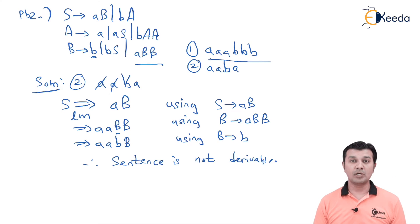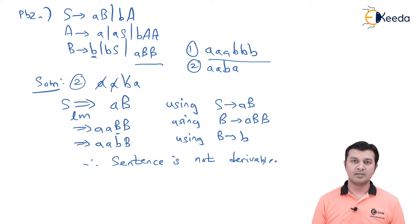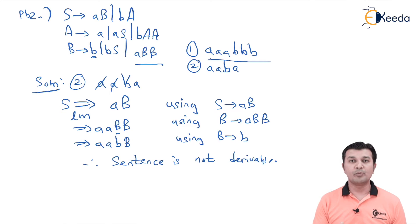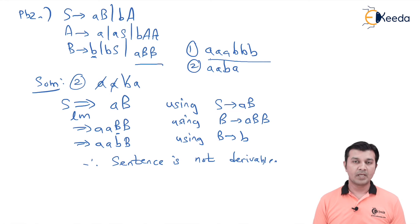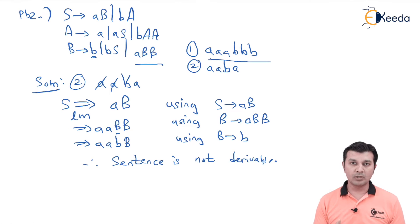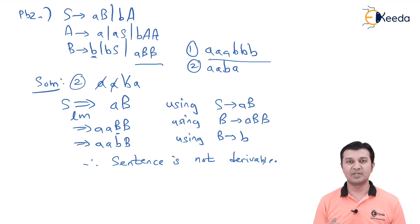Since the sentence is not derivable using LMD, let us consider RMD. There is an important note: if a sentence is not derivable using LMD, it cannot be derived using RMD either - that is a de facto rule. If a sentence is derivable, it has to be derivable using both LMD and RMD. Since we clearly see LMD is not possible, we need not check RMD because it is also 100% not possible. However, in an exam if the sentence is complicated and you are confused, try both LMD and RMD - if neither works, conclude the string is not derivable.